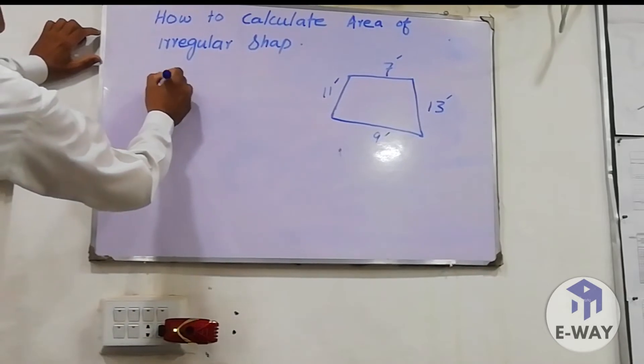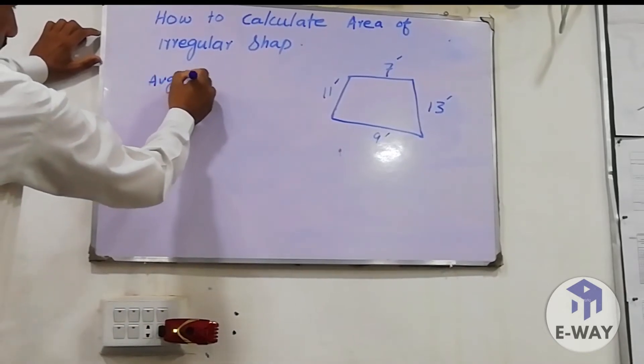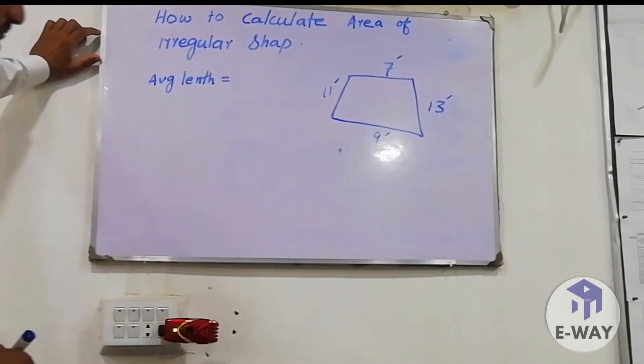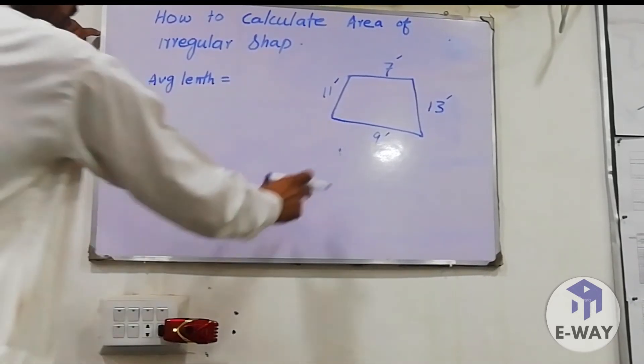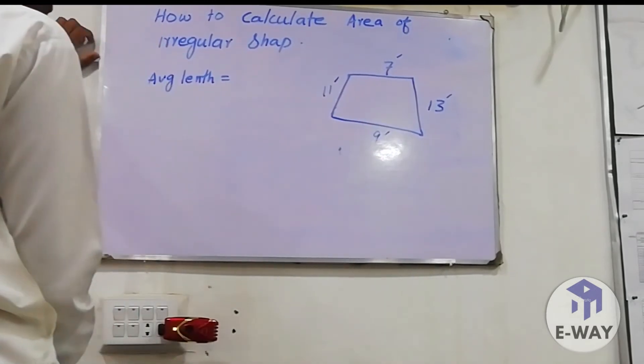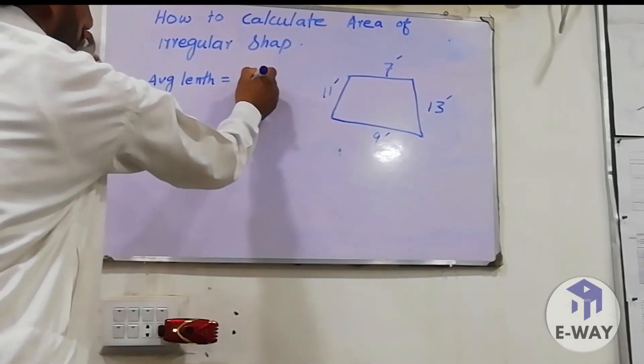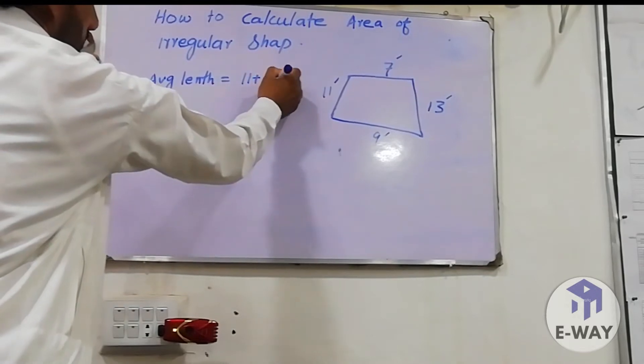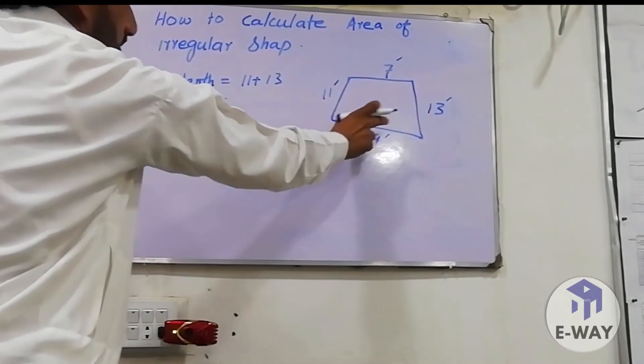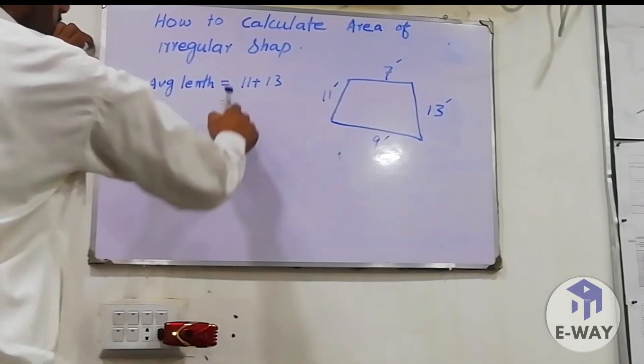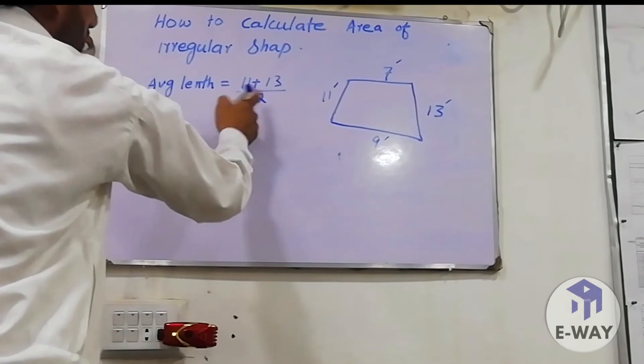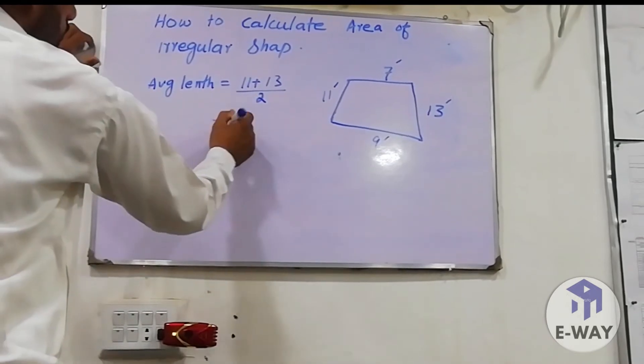Average area length: one side is 13 feet and the other side is 11 feet. So 11 plus 13 divided by 2. In this formula we can calculate average length.